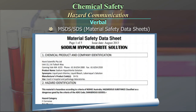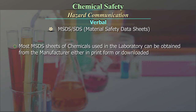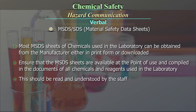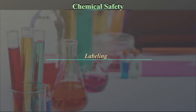Here is an example of page 1 of the MSDS of sodium hypochlorite solution giving all this detailed information. Most MSDS sheets of chemicals used in the laboratory can be obtained from the manufacturer either in print form or downloaded. Ensure that the MSDS sheets are available at the point of use and are compiled in the documents of all chemicals and reagents used in the laboratory. This should be read and understood by the staff.